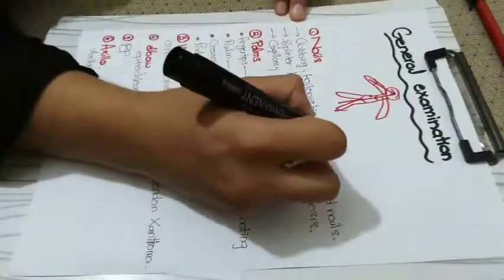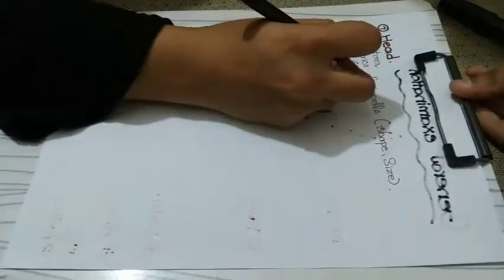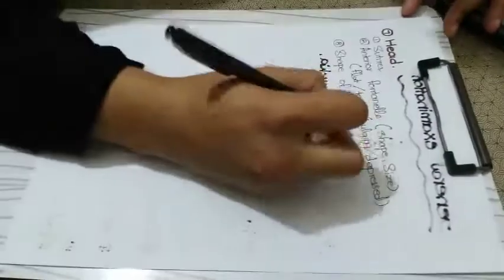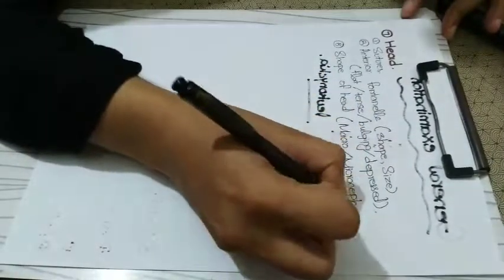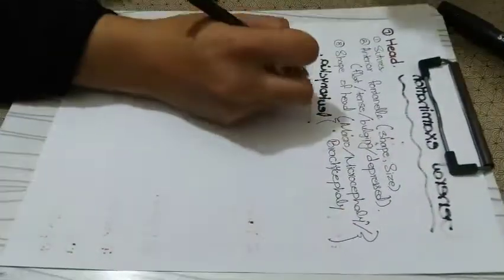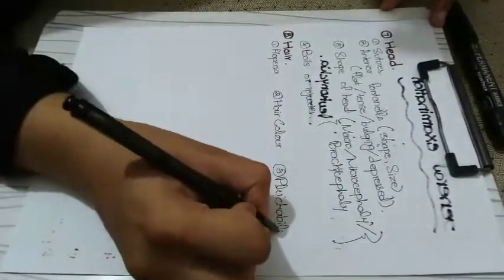In the head, we check for the sutures and the anterior fontanelle — whether it is open or closed, what is the shape and size, and whether it is flat, tense, bulging, or depressed. Then we check the shape of the head — whether it is big, small, or whether the occiput is flat — and check for any boils or injuries.